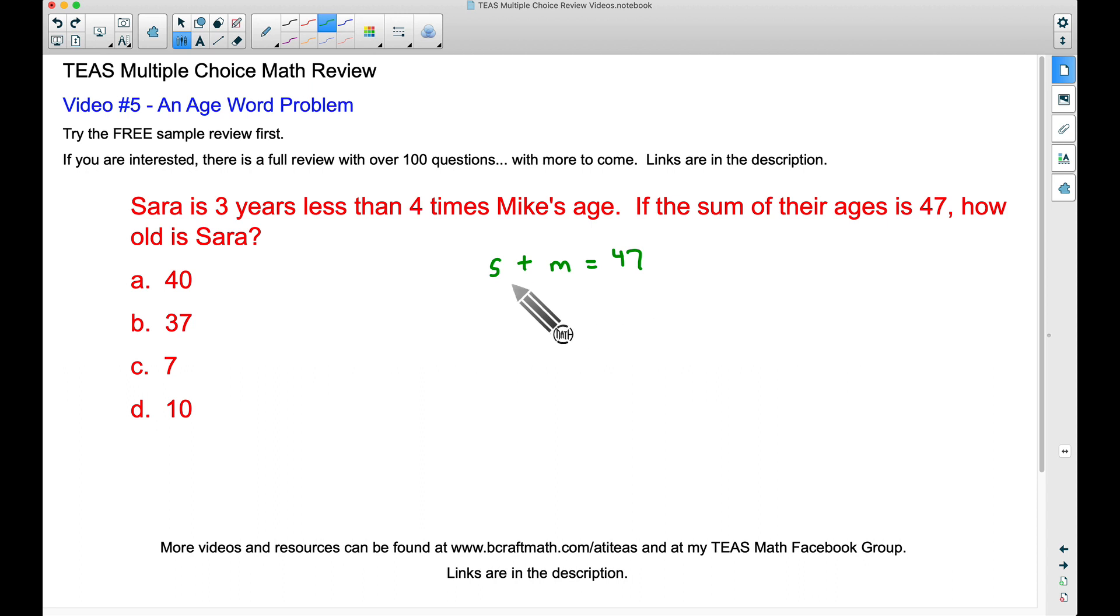I mentioned systems of equations. We have two variables, Sarah's age and Mike's age. Check out this first sentence: Sarah is three years less than four times Mike's age. We can write Sarah equals three years less than four times Mike's age.